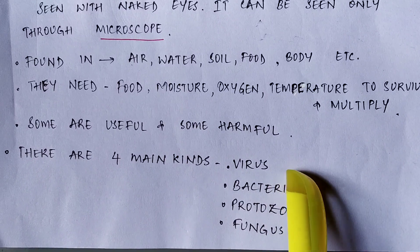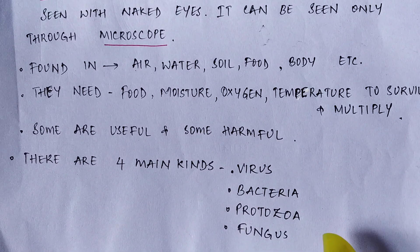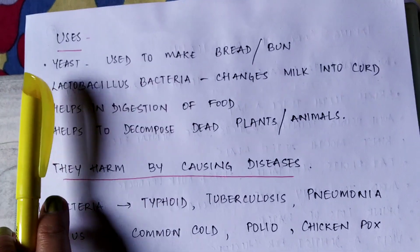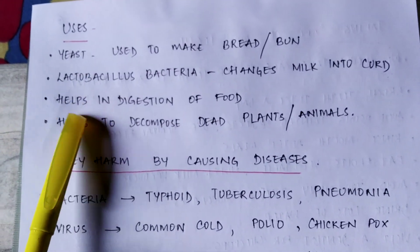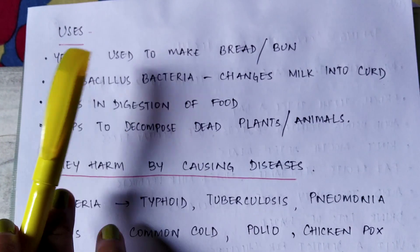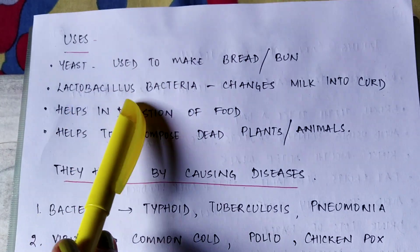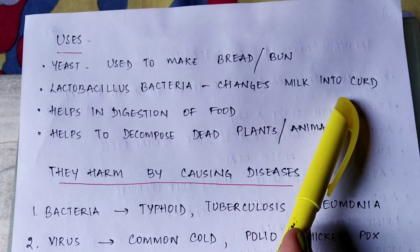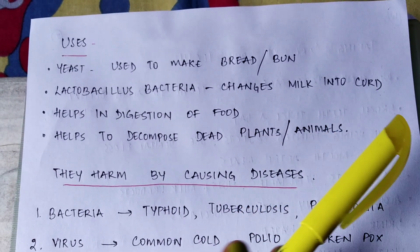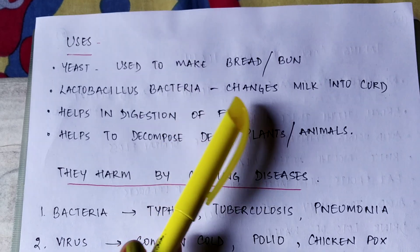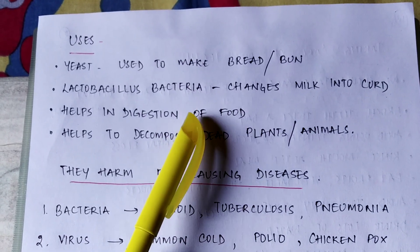There are four main kinds of microbes: virus, bacteria, protozoa, and fungus. Some are useful — for example, yeast is used to make bread and buns. Lactobacillus bacteria changes milk into curd, which also helps your digestion process.